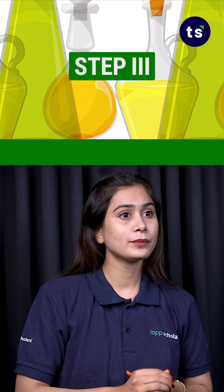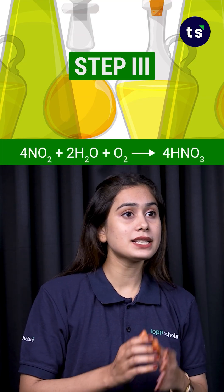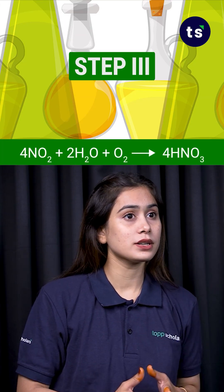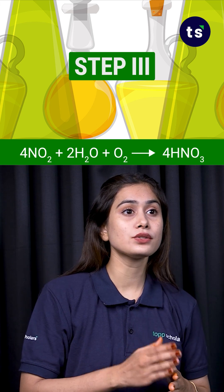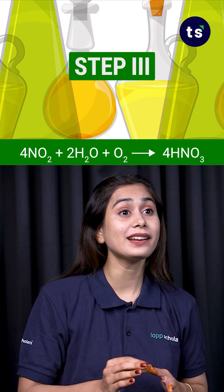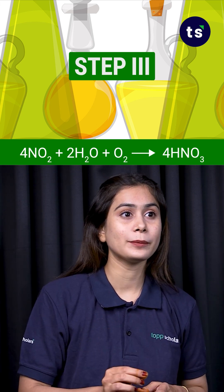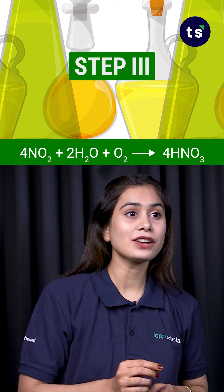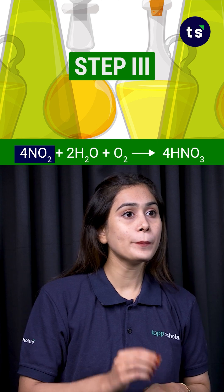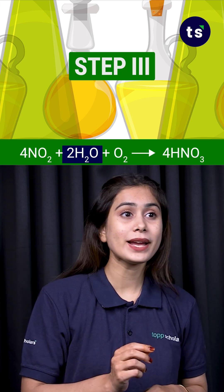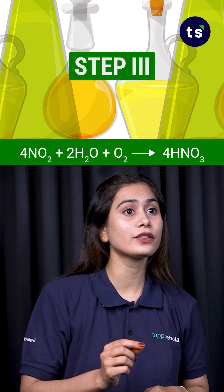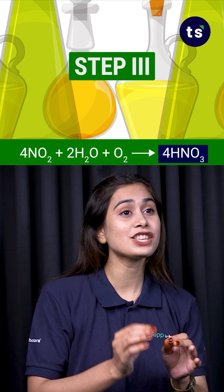Step 3: The nitrogen dioxide dissolves in water, reacting with oxygen to form nitric acid (HNO₃). Reaction: 4NO₂ + 2H₂O + O₂ → 4HNO₃. This nitric acid is used in fertilizers, explosives, and more.